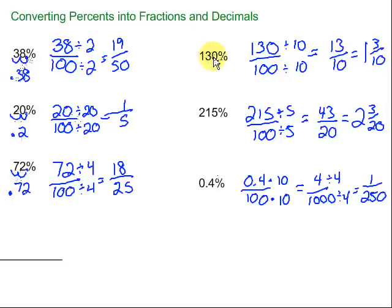Then we go up here. 130%. Still, two spots. Don't be thrown off when we've got more than two digits. So we're going to have our decimal right here. Two spots to the left. One, two. We get 1.3. And then this one, 215%. Again, behind the last digit. Two spots to the left. We get 2.15.